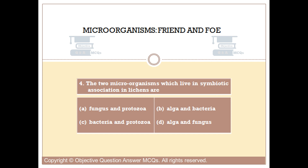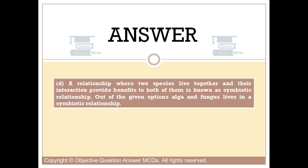Question number four. The two microorganisms which live in symbiotic association in lichens are: Option A: Fungus and protozoa. Option B: Alga and bacteria. Option C: Bacteria and protozoa. Option D: Alga and fungus. The right answer is option D. A relationship where two species live together and their interaction provides benefits to both is known as a symbiotic relationship. Alga and fungus live in a symbiotic relationship in lichens.